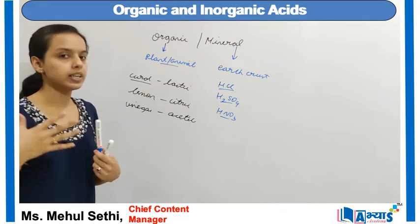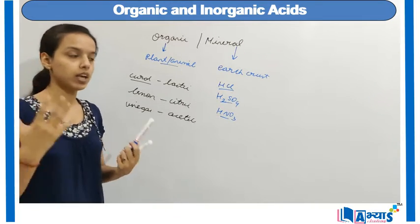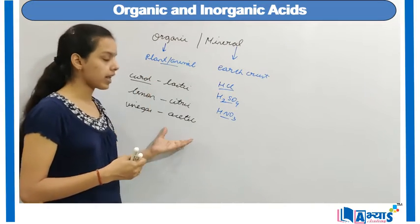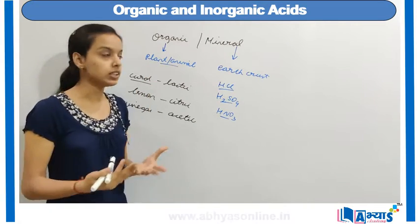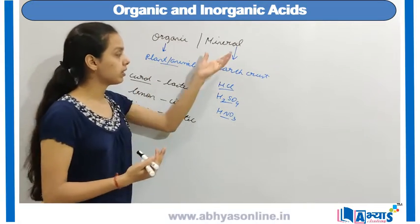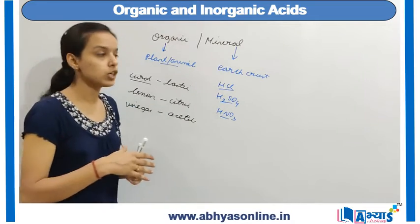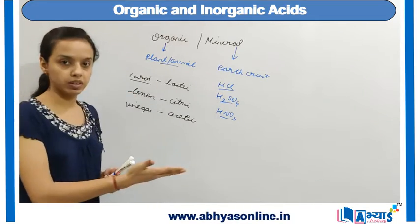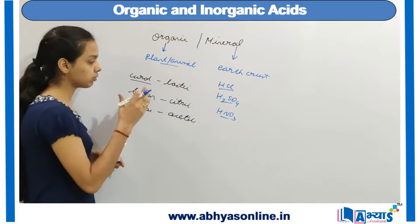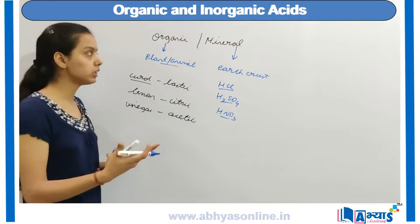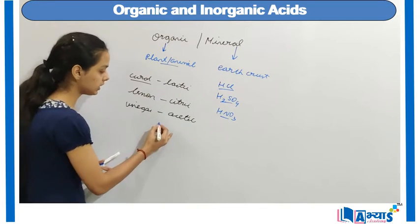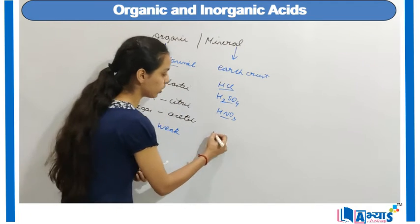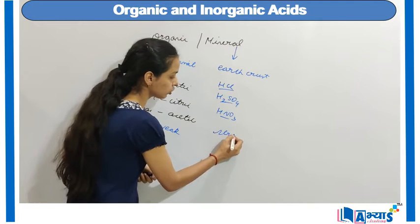Through major discoveries and experiments, scientists have found that most organic acids are actually weak acids, and most mineral acids are strong acids. So a third point of difference between organic and mineral acids is that most organic acids are weak acids, while most mineral acids are known as strong acids.